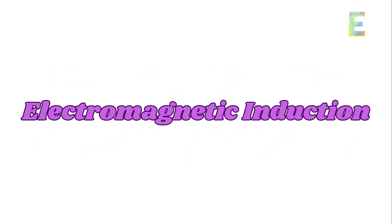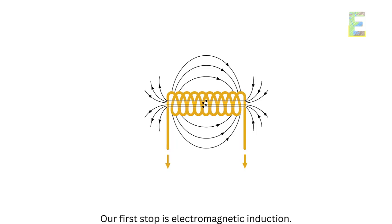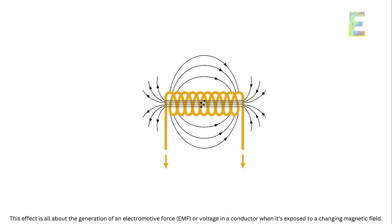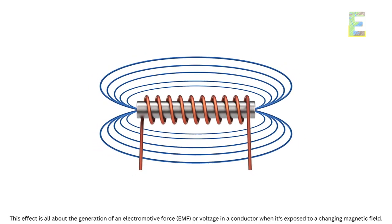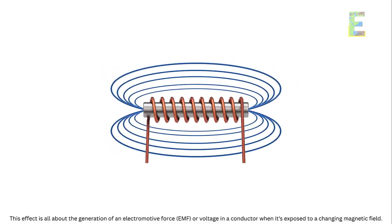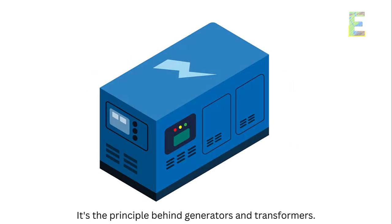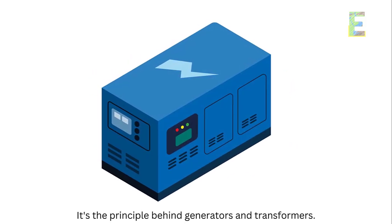Electromagnetic induction. Our first stop is electromagnetic induction. This effect is all about the generation of an electromotive force, EMF, or voltage in a conductor when it's exposed to a changing magnetic field. It's the principle behind generators and transformers.